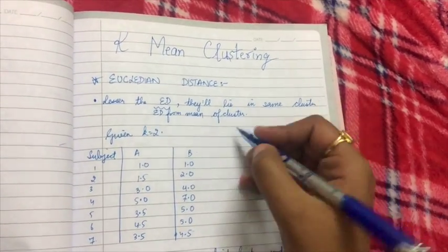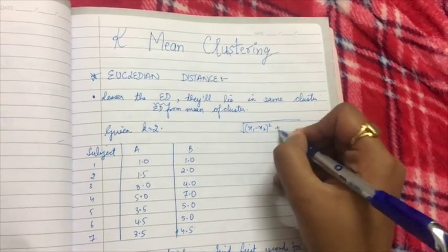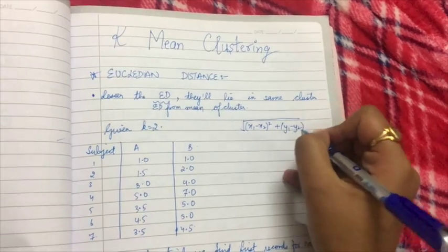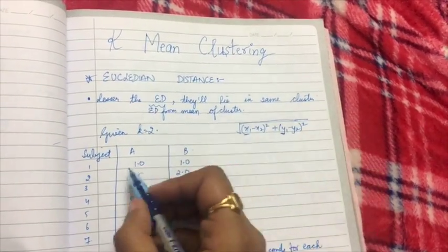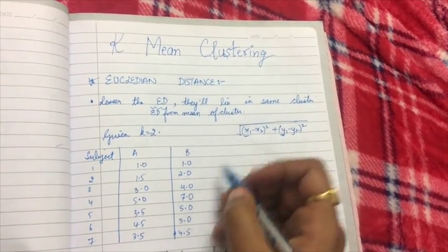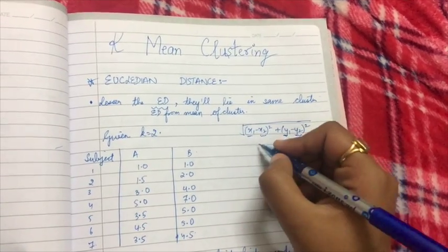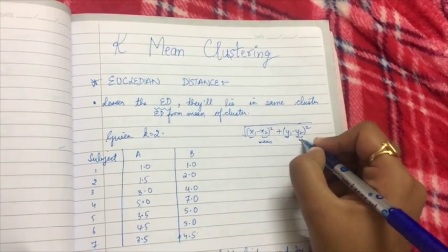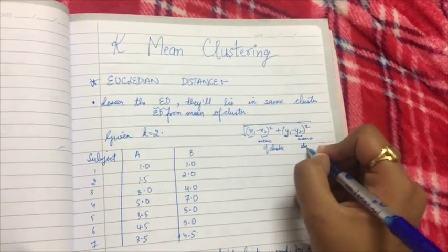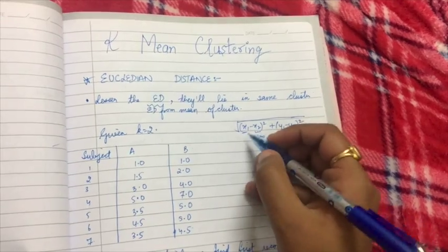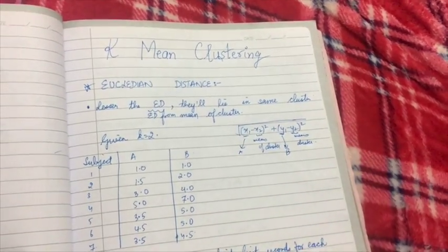The Euclidean distance formula is: square root of (x1 minus x2) whole square plus (y1 minus y2) whole square, where x and y are the values for the records, and x2, y2 will be the means of the cluster — the mean values of a and b for each record.